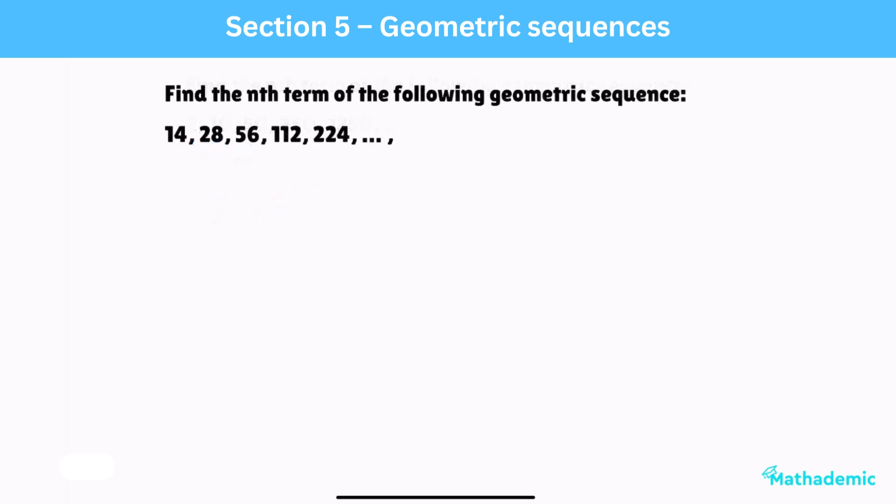The final question of this section extends the last idea slightly. Work out the nth term of the following geometric sequence: 14, 28, 56, 112, 224. As usual, start with the first term, 14, and multiply it by the common ratio, in this case, 2. So, the initial nth term expression can be given by 14 times 2 to the n minus 1. But, since 14 is a multiple of 2, it can be written as 7 times 2. So, simplifying this complete expression with the help of index laws, gives us 7 times 2 to the n.